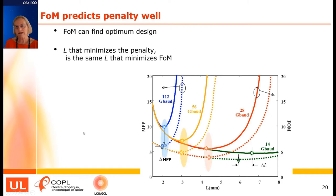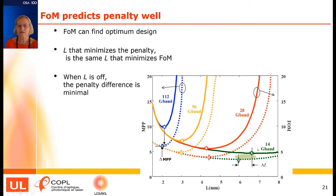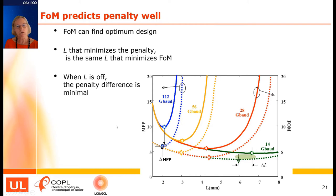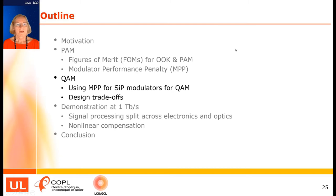Some might notice that in one case the optimal points differ slightly between the figure of merit and the simulated power penalty — for example, the figure of merit might pick 6.375 mm while the true optimum is at 6 mm. However, because these two curves are very shallow at this point, the slight mismatch has very little impact on the actual power penalty. So the figure of merit reliably reflects the power penalty while being a nice closed-form expression that is easy to sweep.